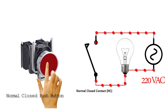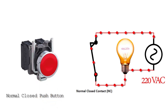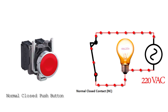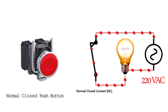If we release the push button, the NC contact closes again and current starts to flow and the bulb turns on. So basically, normally open and normally closed push buttons work in exactly the opposite way.